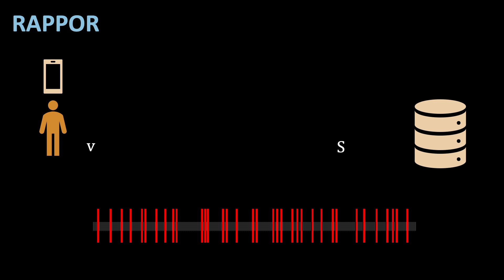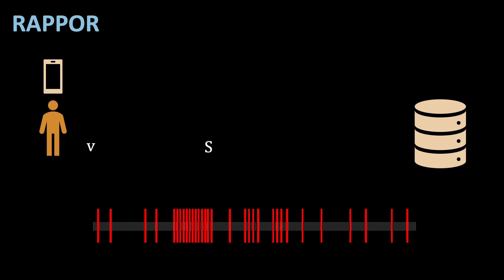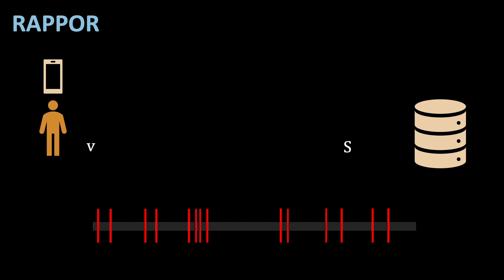We send S instead of B prime, as I've said, to further complicate tracking. If you would use the permanent randomized response every time the value gets queried by the server, the attacker can infer some information out of this fact that it is always the same array. Using a secondary array to further randomize the response increases privacy.